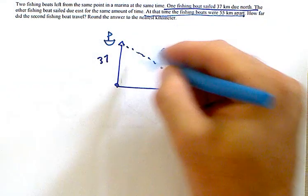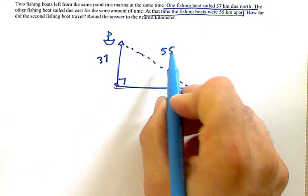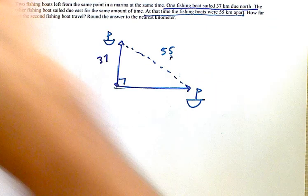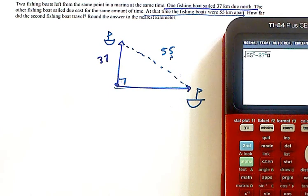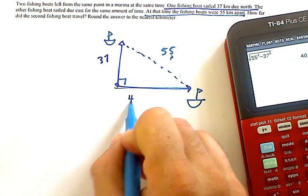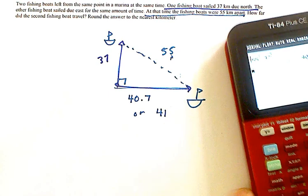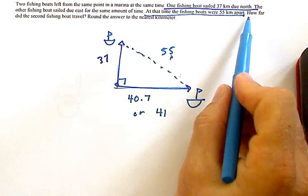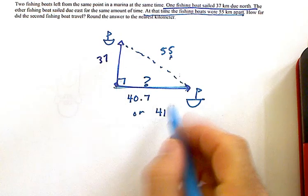So the understanding of this question is that one went one direction, one went another to create a right triangle. And then their distance apart was a hypotenuse. So that's a second, take the hypotenuse and then subtract. And you get a 40, 40.7 or 41 for basically how far did the second boat travel. And that's your answer here.